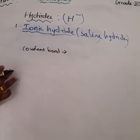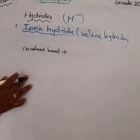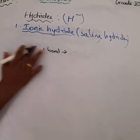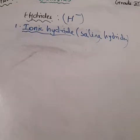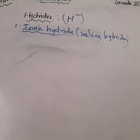The second type is covalent hydrides, where a covalent bond is formed between the two compounds. The third type is metallic hydrides, obtained by the hydrogenation of metals. In metallic hydrides, the metallic bond is formed between free electrons and the central metal atom. Hydrogen occupies the interstitial sites — the voids or holes — within the metal lattice.